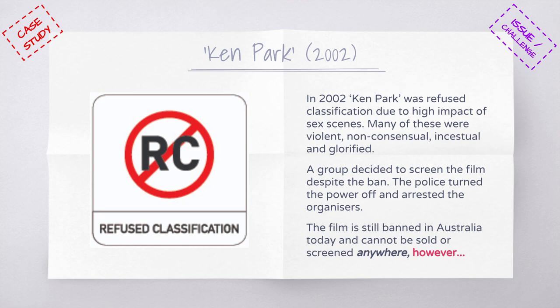This highlights that for traditional media, the classification system works. The organisers were arrested, they broke the law, and Australian audiences did not consume the banned film. To this day the film is banned in Australia — it cannot be sold or screened anywhere, and there will still be significant fines and arrests for any organisations that distribute it.